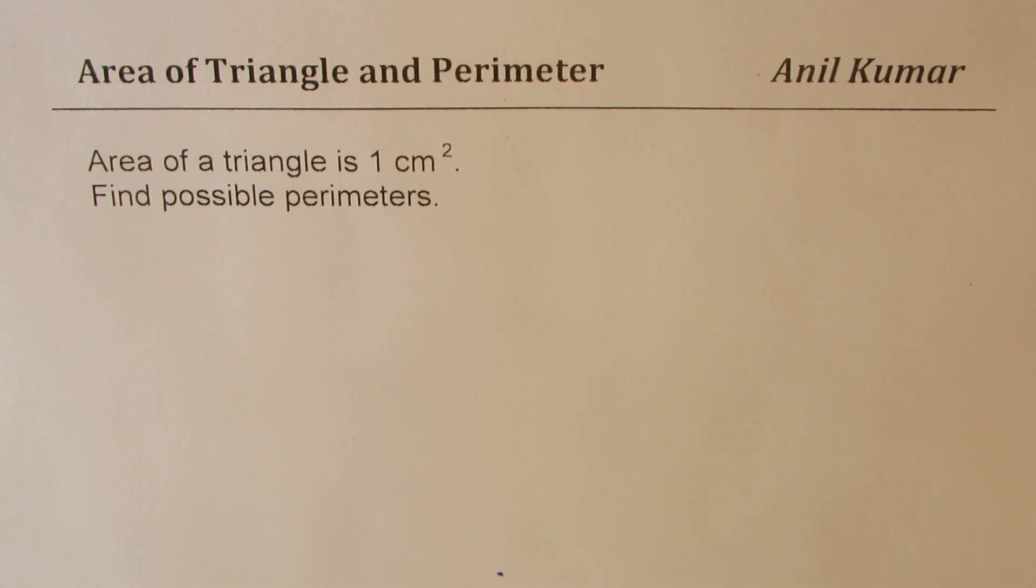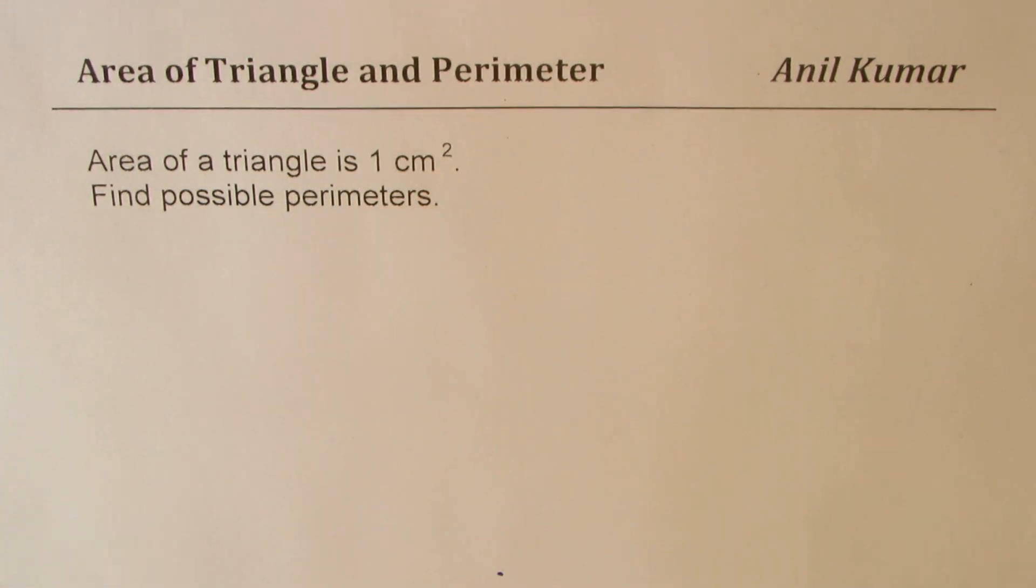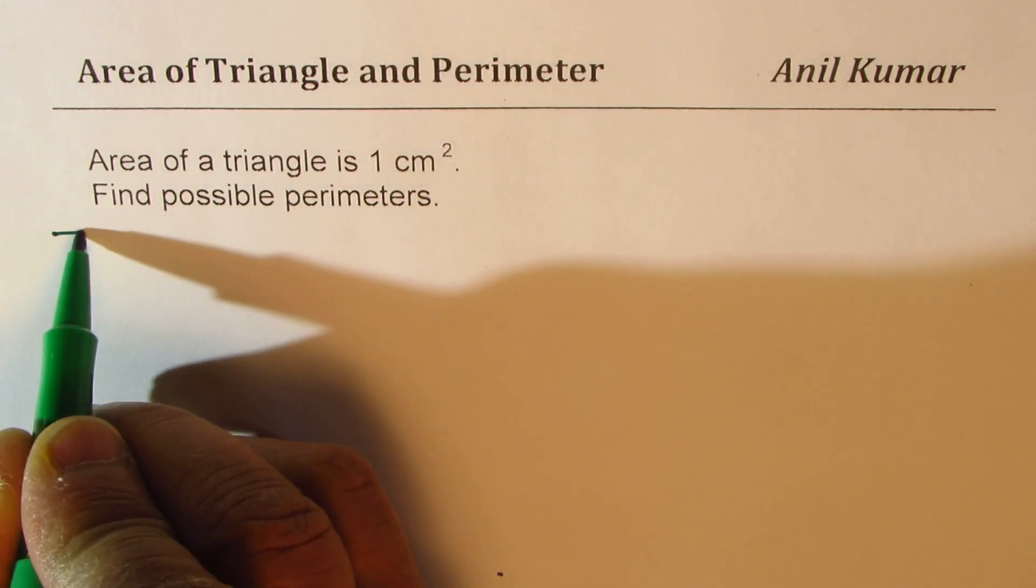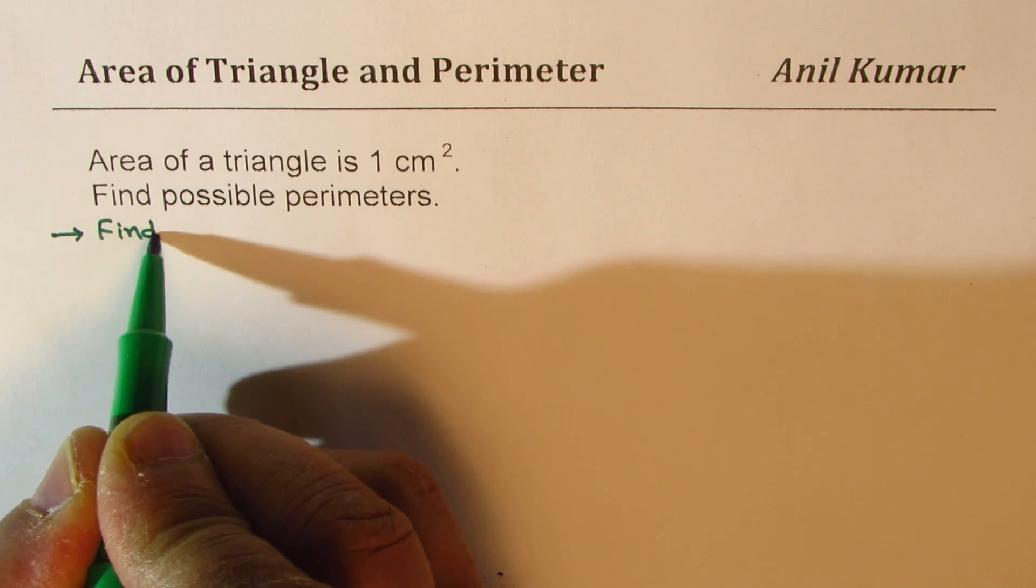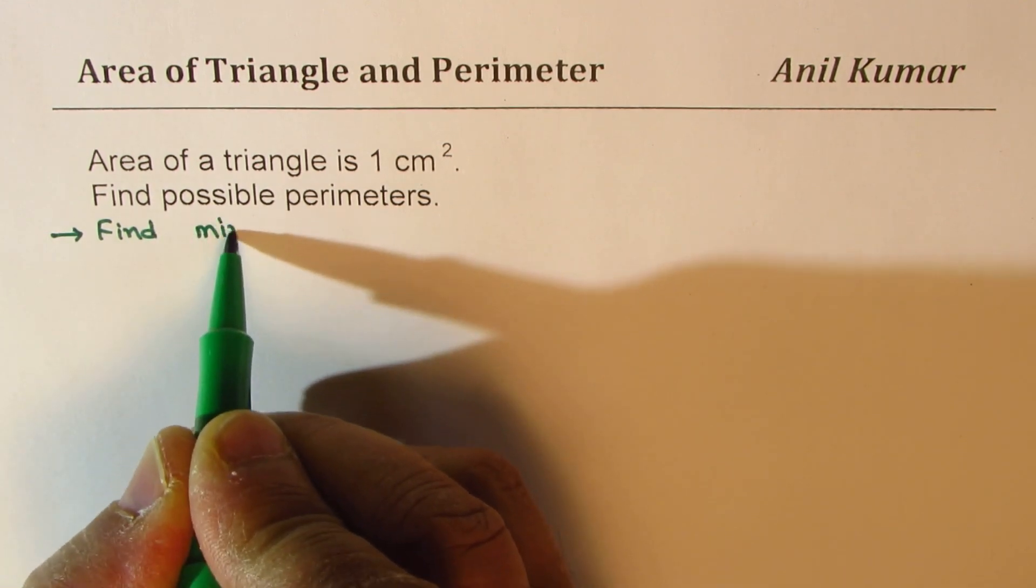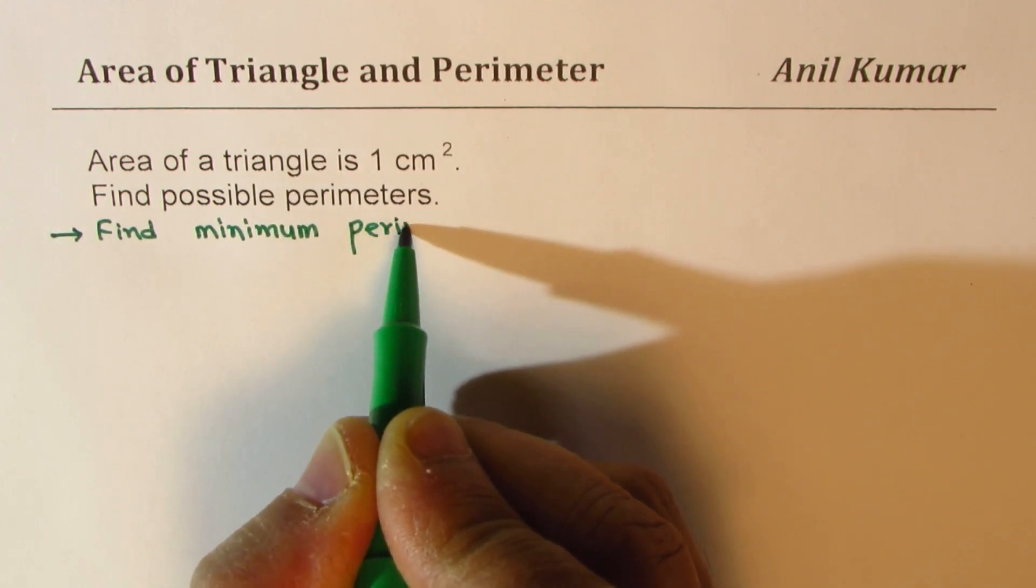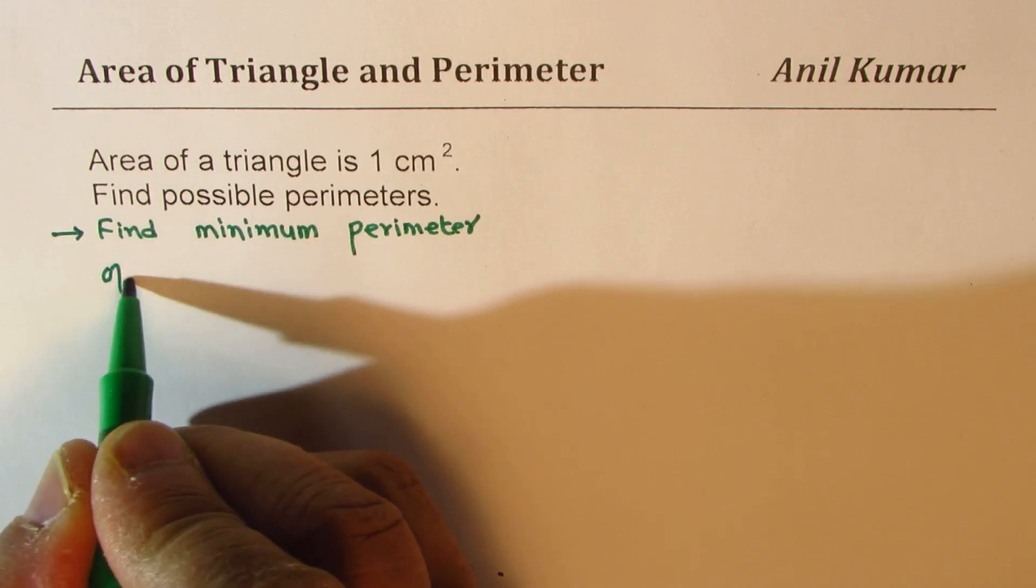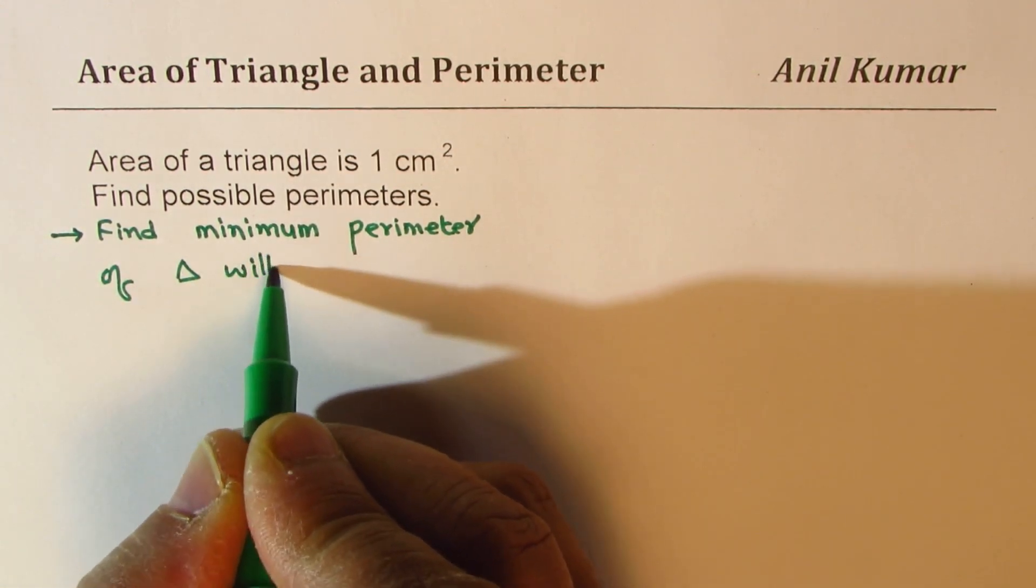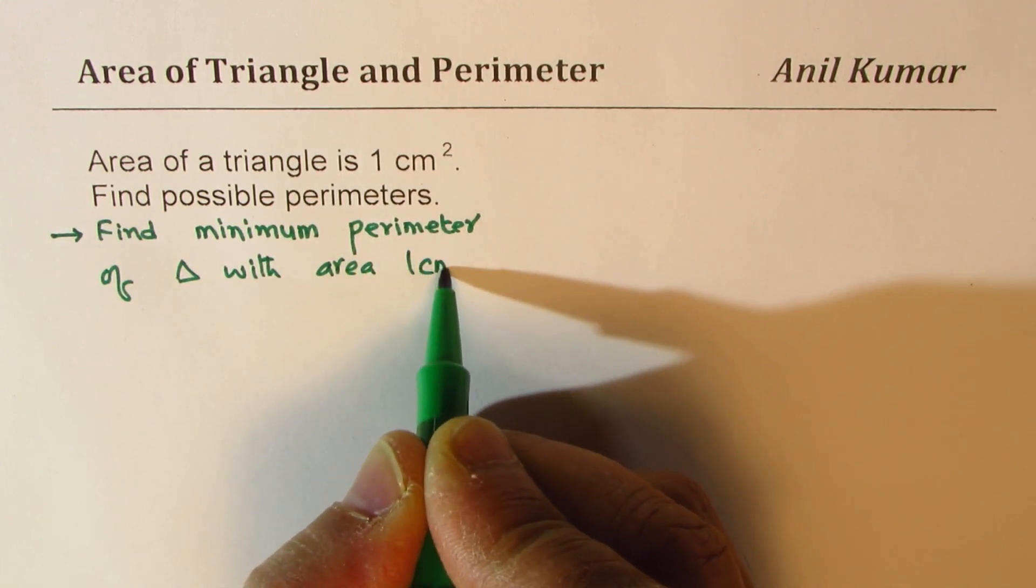As an extension, you can also find the triangle with minimum perimeter. Find minimum perimeter of triangle with area one centimeter square.